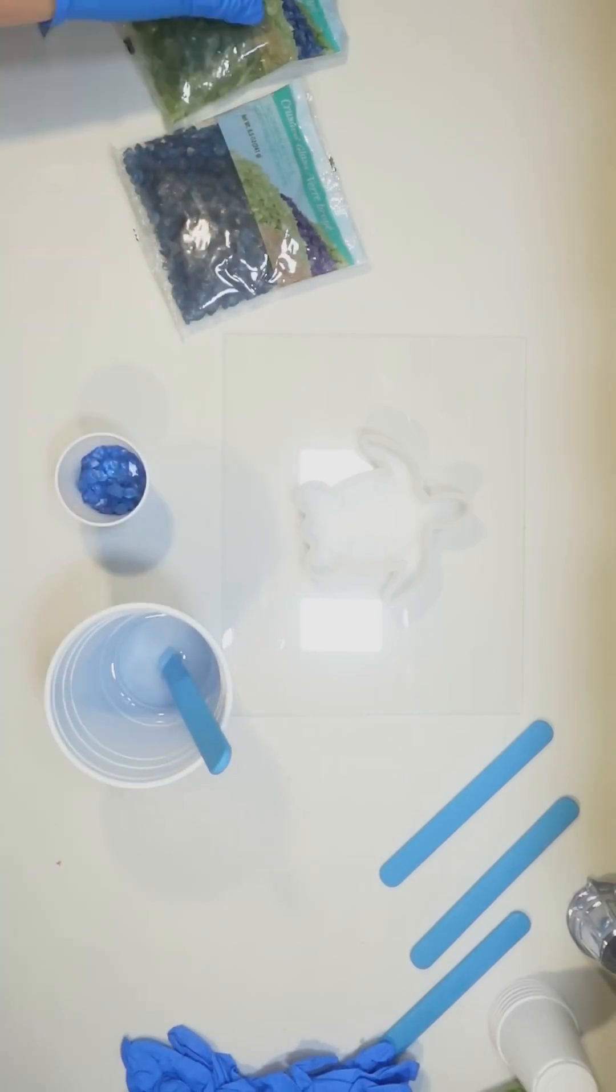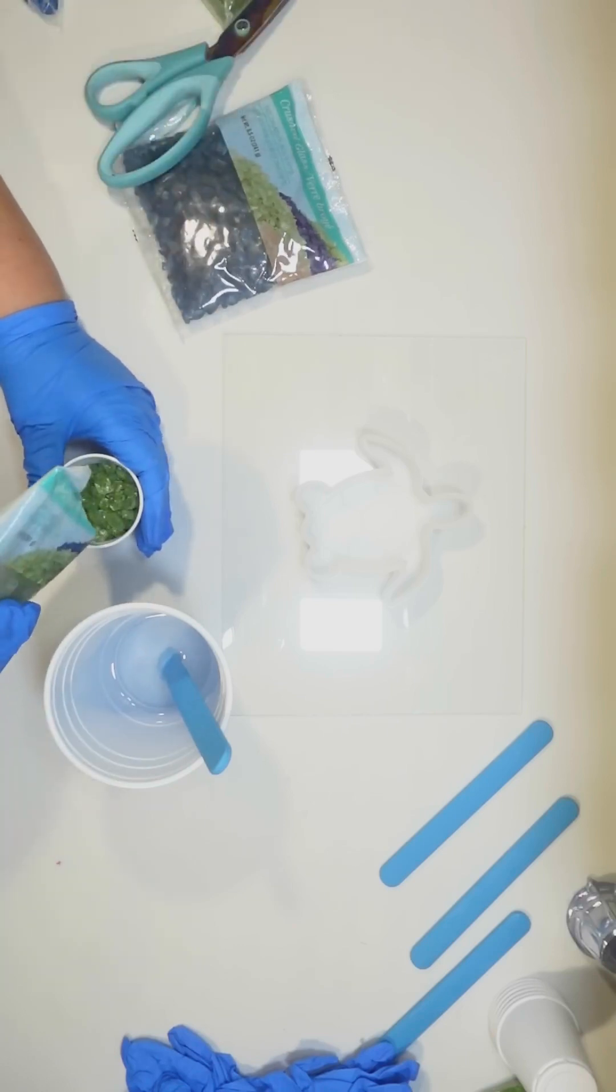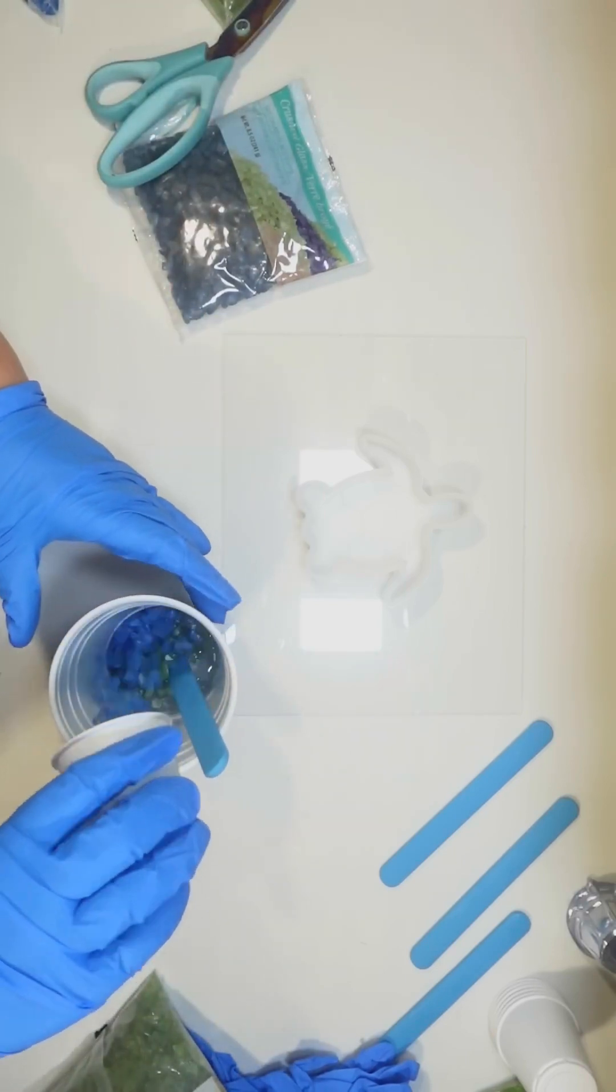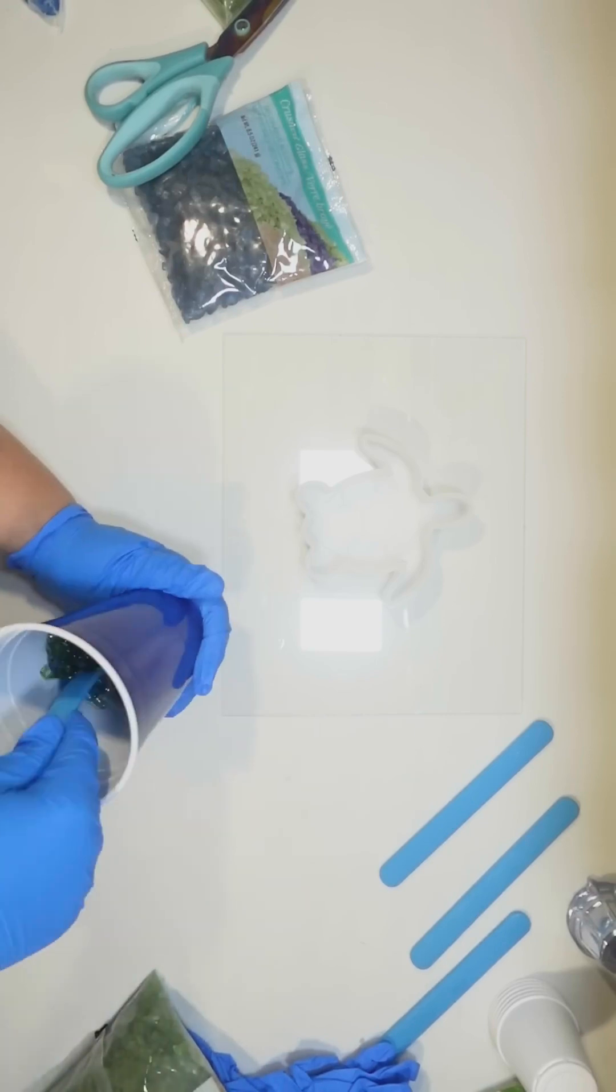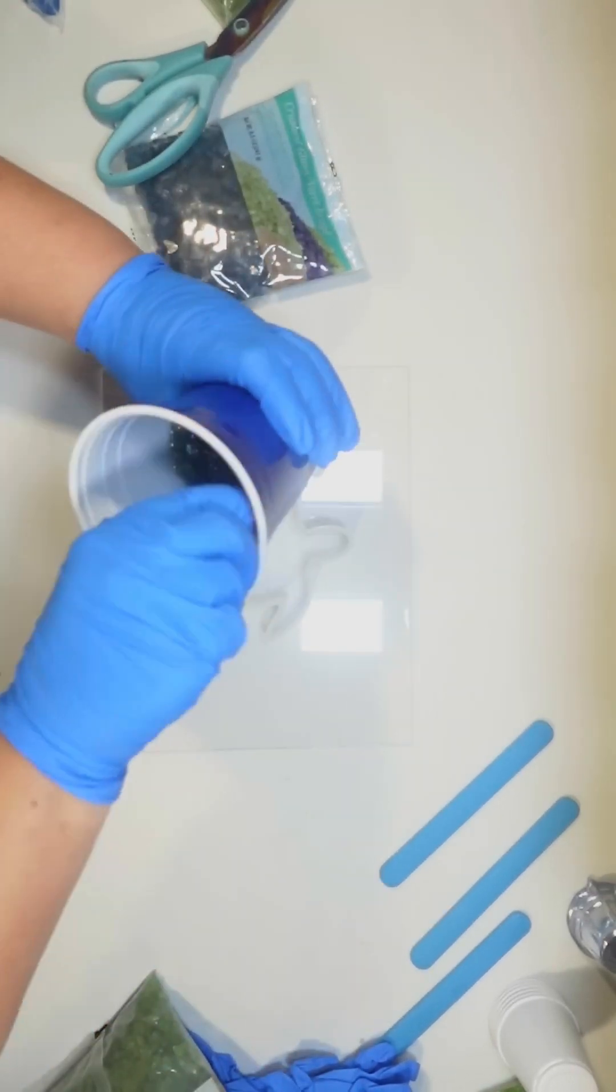And then I'm going to be using the crushed glass from Dollar Tree. I want both the blue and the green - I thought that would look pretty - so I just poured them into the resin that I mixed up.